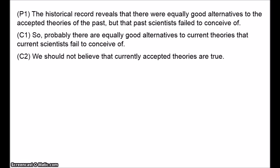Recall from the last video that one of the realist responses to the underdetermination argument is to challenge the defender to produce the empirically equivalent rival. If you're claiming that a successful theory has a rival that could do just as good a job, the onus is on you to tell us what that rival is. Stanford uses this historical induction to attempt to avoid that challenge. The history of science tells us that we have good reason to think that there are such theories, even if we can't specify them precisely.